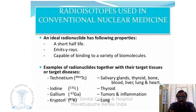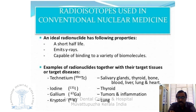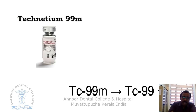The isotopes used in conventional nuclear medicine should meet specific criteria. An ideal radionuclide should have a short half-life and emit gamma rays capable of binding to a variety of biomolecules. The most commonly used is Technetium-99, used for imaging salivary glands, thyroid, bone, blood, liver, lung, and heart. Others include Iodine-131 for the thyroid, Gallium-67 for tumors and inflammation, and Krypton-81 for lung imaging.